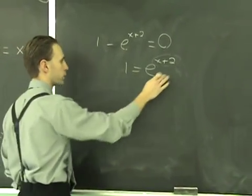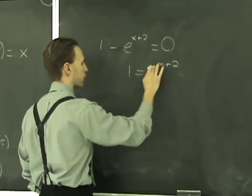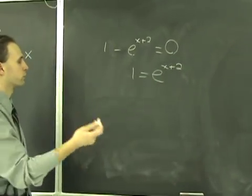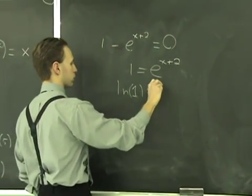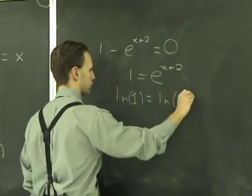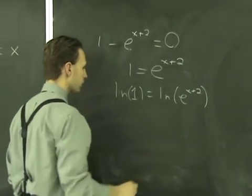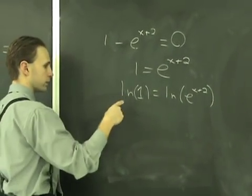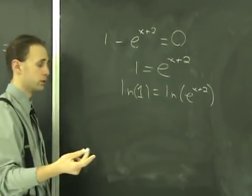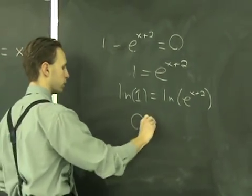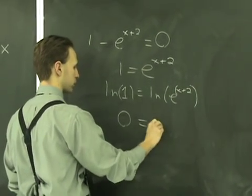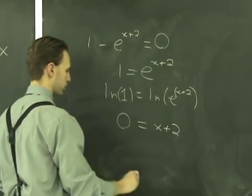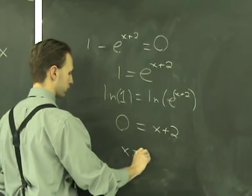But if you didn't quite see that, then you could do it the regular way by taking the natural log of both sides. Let's say Ln1 equals Ln of E to the X plus 2. So the natural log of 1 is 0 because E to the 0 is 1. So that's 0 equals. And these expressions undo each other. And we say you're going to be left with just the exponent. And so you get X equals minus 2.